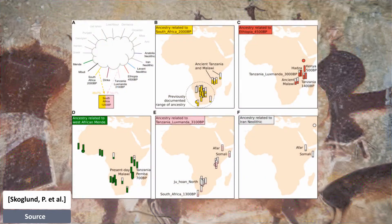They constructed a model where ancient and present-day African populations trace their ancestry to a set of nine ancestor populations. As a proxy for these populations, three different ancient Near Eastern populations and six African populations were used that harbor substantial ancestry related to major lineages present in Africa today. The Mende from Sierra Leone represent the component of ancestry that exists in high proportions in Western African populations, and the ancient Southern African genomes represent the ancestry of Southern Africa before agriculture.